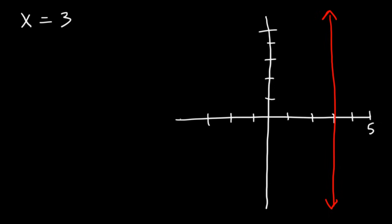Now what about graphing this equation? Let's say y = -2. Where's that? Now if y is equal to a number or a constant, it's going to be a horizontal line. So we're going to have a horizontal line at -2.